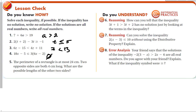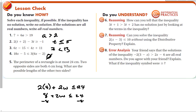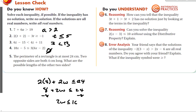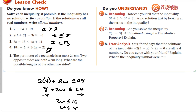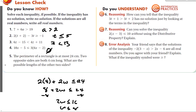Number 5 involves a perimeter problem: the perimeter is at most 24, and two opposite sides are both 4. So 2 times 4 plus 2 times the other side is less than or equal to 24. That gives 8 plus 2w ≤ 24; subtracting 8 gives 2w ≤ 16; dividing by 2 gives w ≤ 8. The other side of the rectangle can be anywhere from 0 to 8 feet.